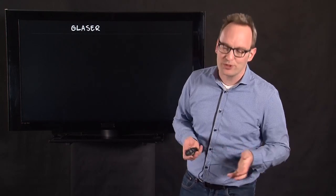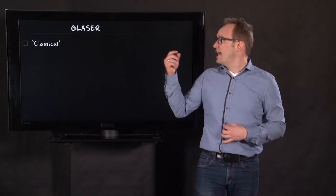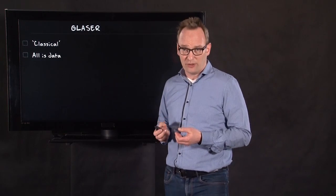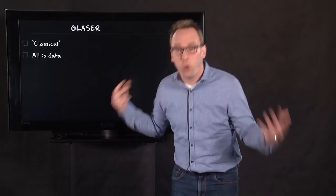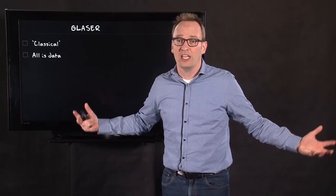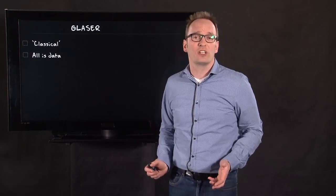Now the second version of grounded theory is the version by Barney Glaser. Glaser was pretty angry in the late 1980s, and sometimes he still is, about new forms or other forms of grounded theory. He calls his form of grounded theory classical grounded theory. The first adagium is all is data. Anything you can use. So grounded theory is not just a qualitative methodology. It's a methodology, which means you can use quantitative data and you can use anything. Anything could be considered as data.